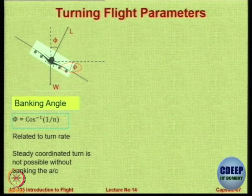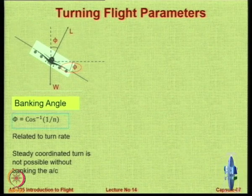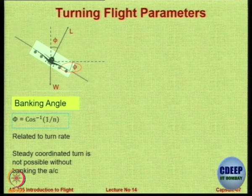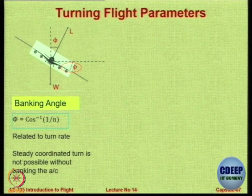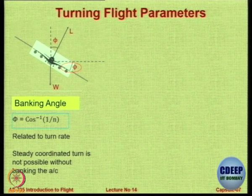Unless you have thrust vectoring, you will not be able to turn horizontally without banking — you always have to bank to turn. If you have direct thrust vectoring, you can change direction without banking. Thrust vectoring is normally only in the vertical or horizontal plane; side thrust vectoring is not commonly provided in aircraft. In airships, however, it is very common to provide a direct side force, in which case no banking is needed.